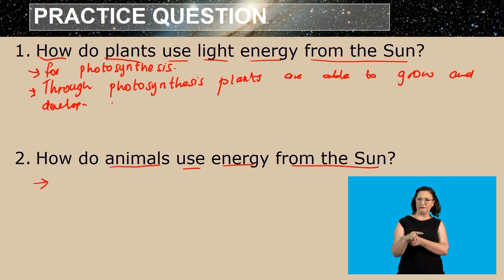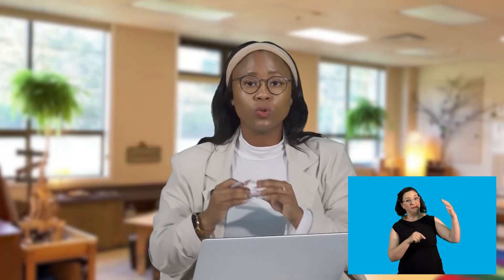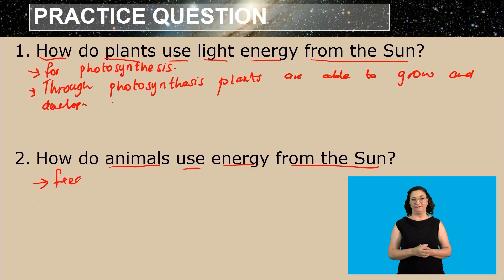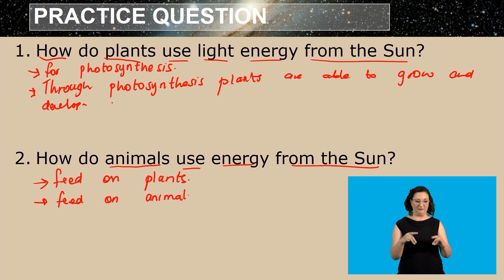Animals use the energy from the sun by feeding on plants that have their energy from the sun. They also use their energy by feeding on animals that have eaten plants. So let's write that down. They feed on plants, and we can also say they feed on animals that have eaten plants.